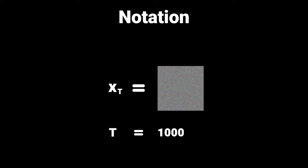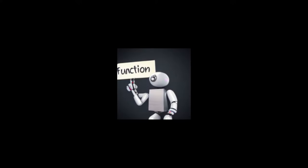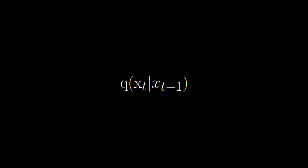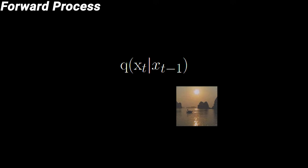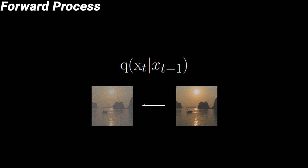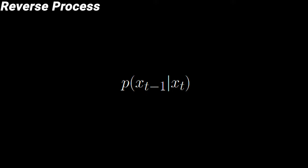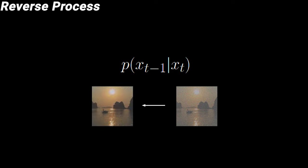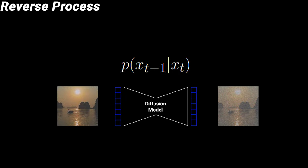We'll define two functions. q, given x, corresponds to the forward process and takes in an image and returns an image with a little more noise added — so x_{t-1} goes in and out comes x_t with more noise. A smaller number means a smaller amount of noise and a bigger number means a bigger amount of noise. The second function is for the reverse process and we'll call it p. p takes in x_t and produces a sample x_{t-1} using the neural network — so x_t with more noise goes in, and out comes x_{t-1} with less noise.